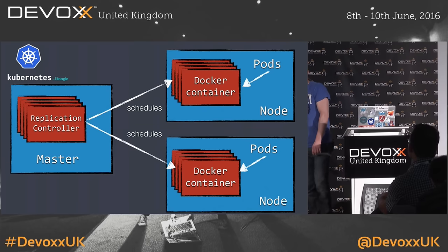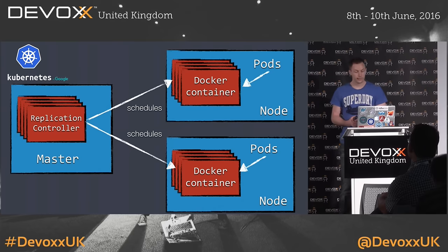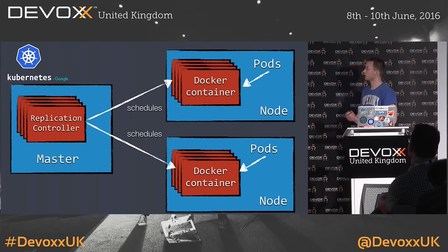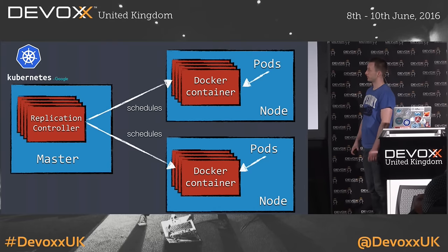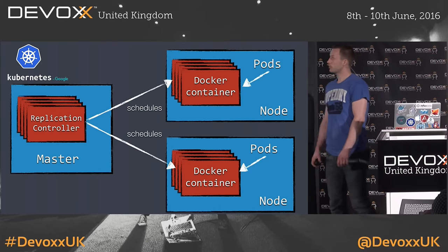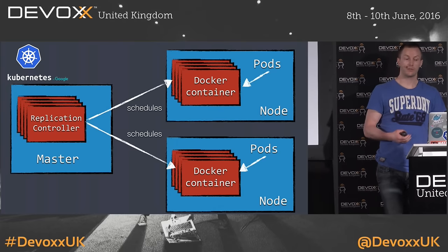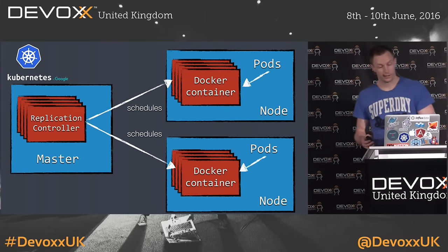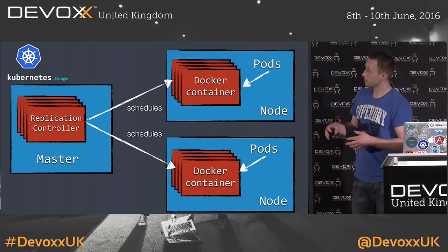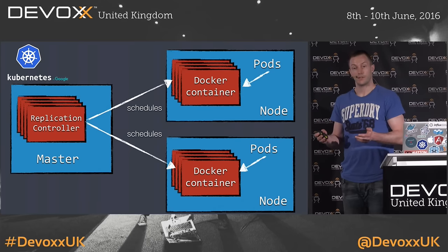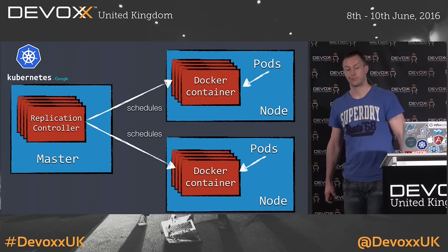When we get Kubernetes up and running, we can actually start thinking about scheduling some containers. Scheduling means actually starting our containers on the cluster. The first thing that you need is a replication controller. This replication controller is an object that runs on the master server. The replication controller gets configured with a number of replicas that it should start.